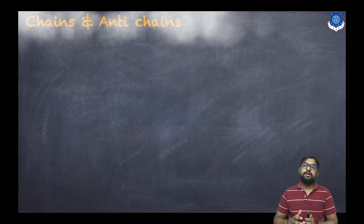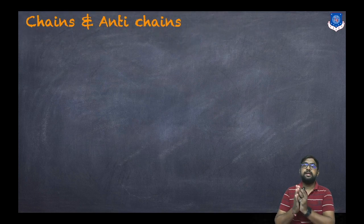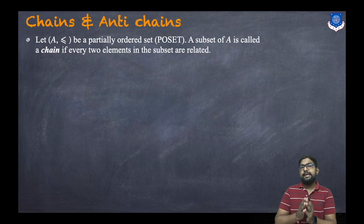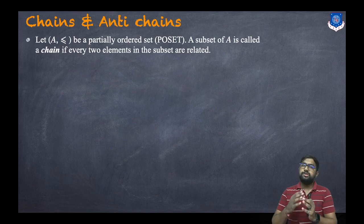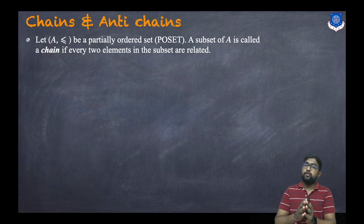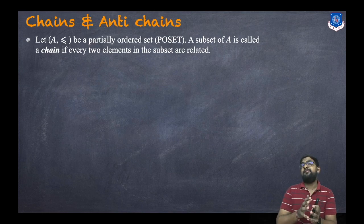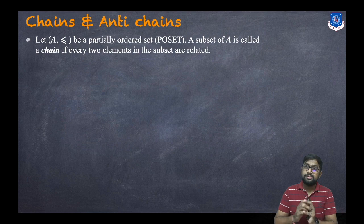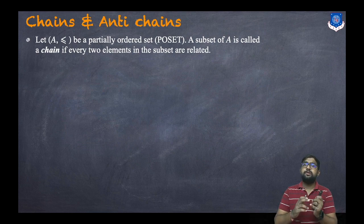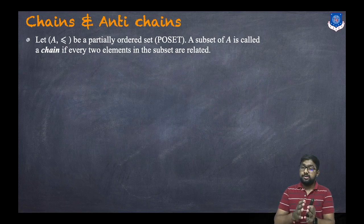First, let us understand what is a chain and what is an anti-chain. Let (A, ≤) be a partially ordered set — in short, a poset. A poset is a set having a partially ordered relation, which is a relation that is reflexive, anti-symmetric, and transitive.